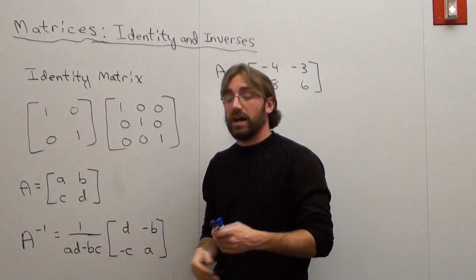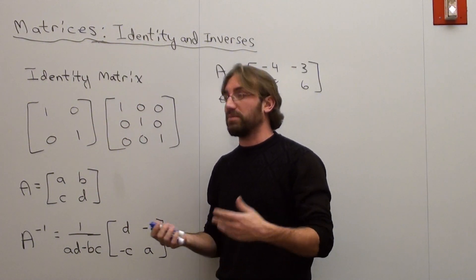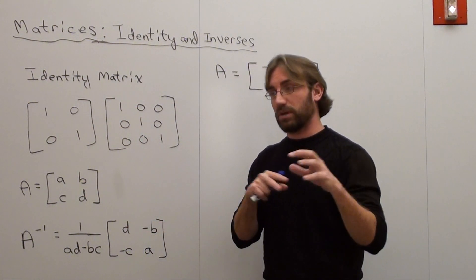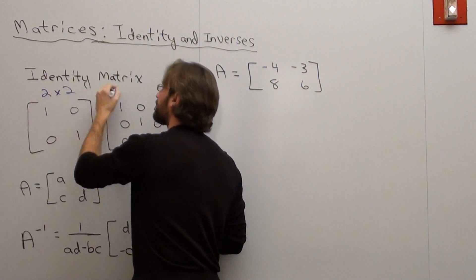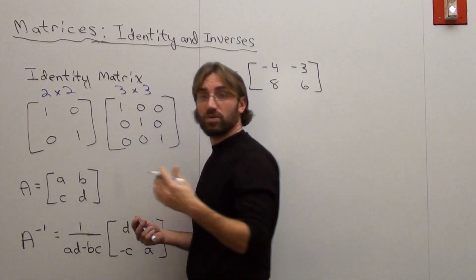And an identity matrix can be in a couple forms, well it can be in many forms actually, but we're only going to talk about 2x2 and 3x3 identity matrices. So this is a 2x2, and that's a 3x3.